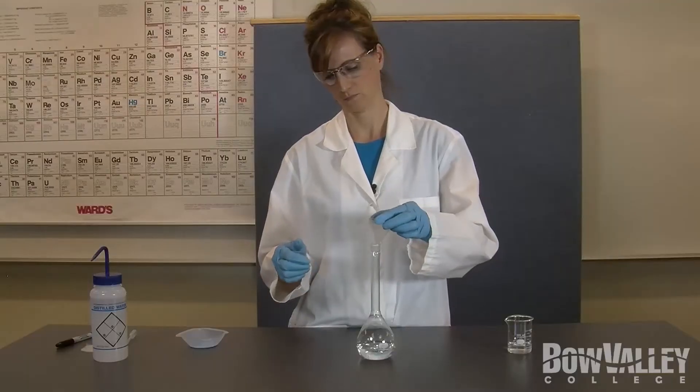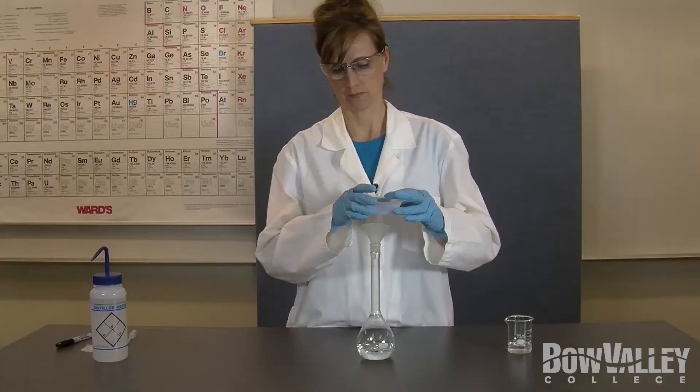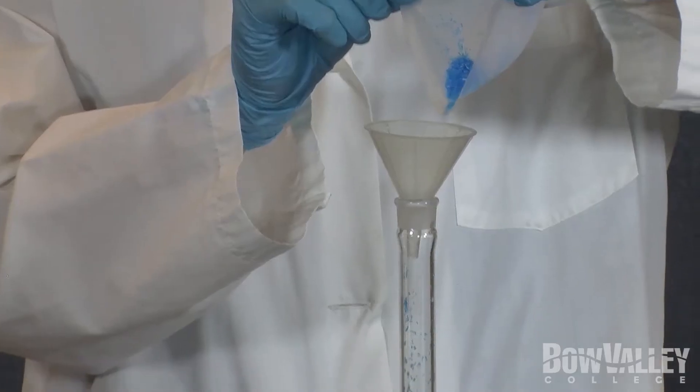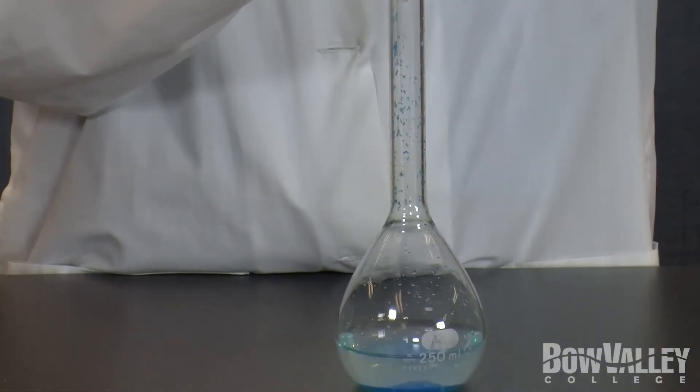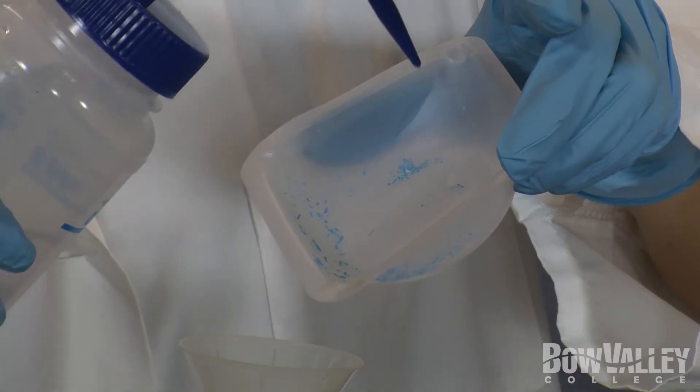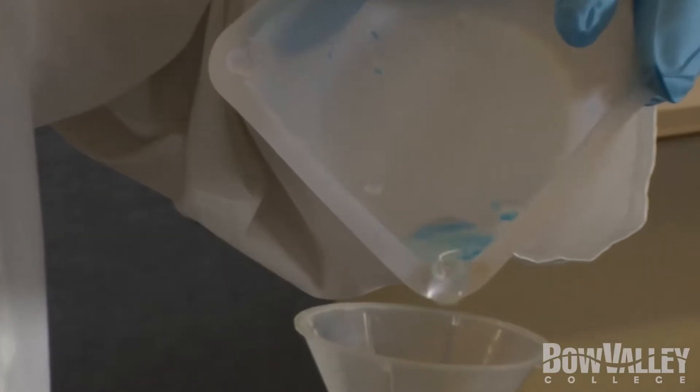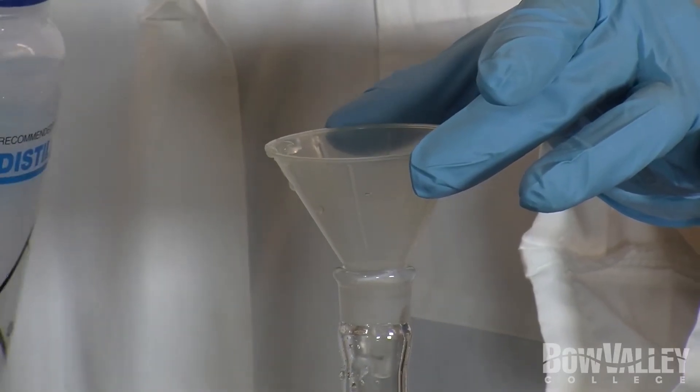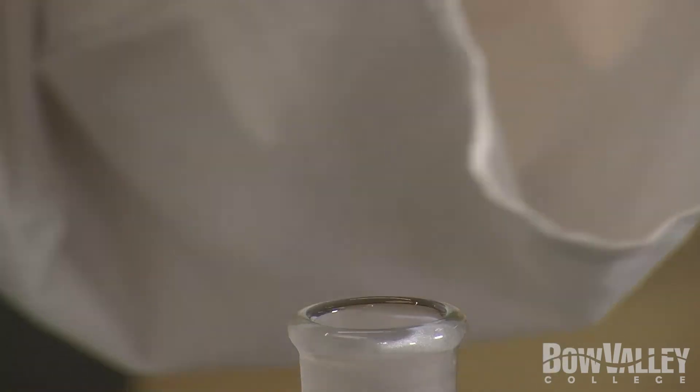Using a clean dry funnel, carefully pour the compound from the weighing boat into the volumetric flask. Rinse the weighing boat several times with a small amount of distilled water from the wash bottle. Add the rinse solution to the volumetric flask with the aid of the funnel. Finally, rinse the funnel a few times with water then remove it from the flask.